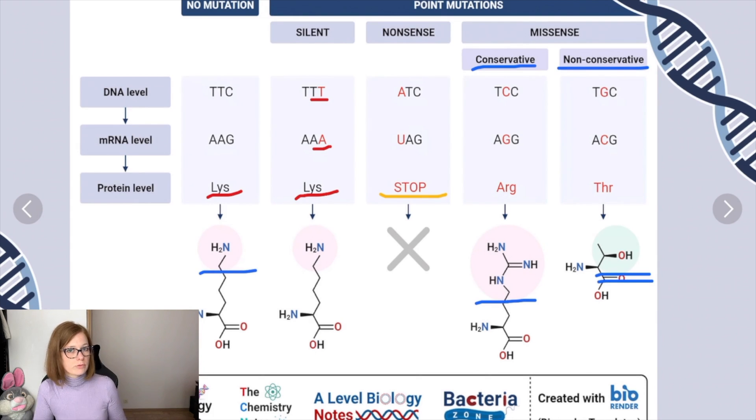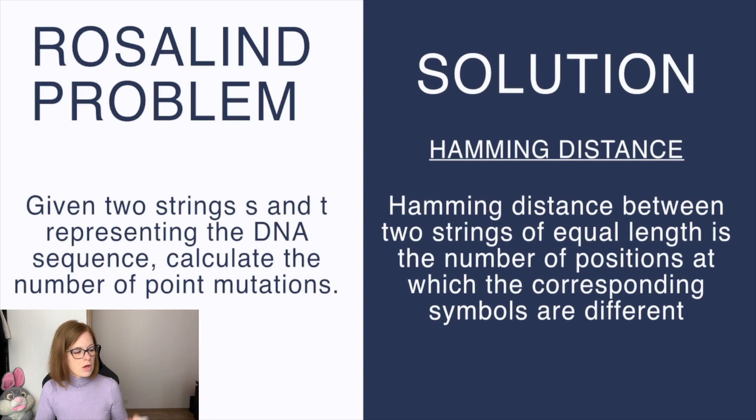Now that we understand what point mutation is we can move to solving the Rosalind challenge problem which states: given two strings S and T representing the DNA sequence, calculate the number of point mutations.